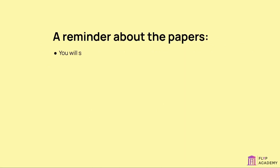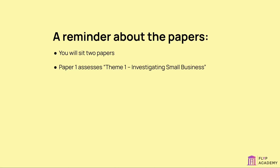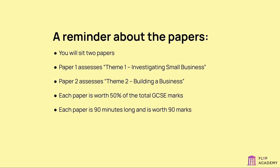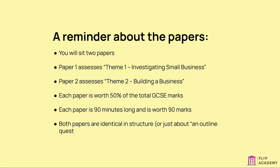You will sit two papers. Paper 1 assesses Theme 1 – Investigating Small Business. Paper 2 assesses Theme 2 – Building a Business. Each paper is worth 50% of the total GCSE marks, is 90 minutes long, and is worth 90 marks. Both papers are identical in structure, or just about. An outline question may be interchanged with a calculate question.